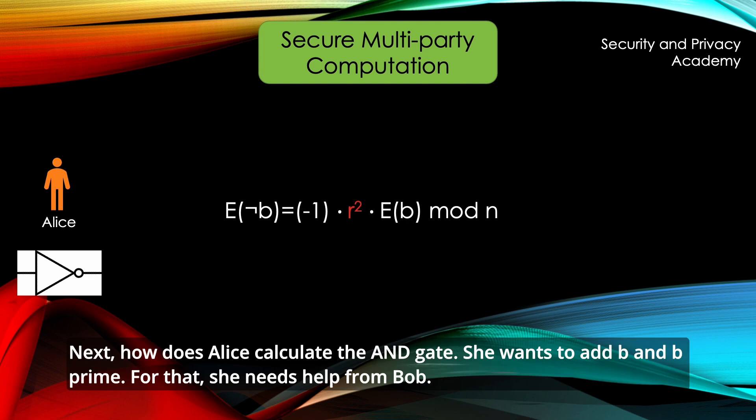Next, how does Alice calculate the AND gate? She wants to AND B and B' for that she needs help from Bob.